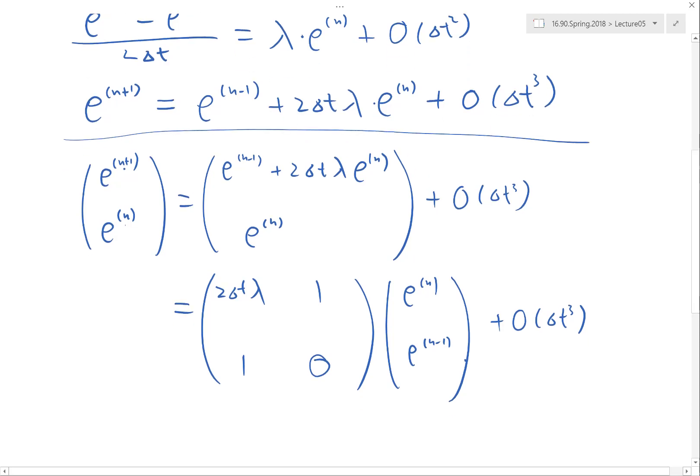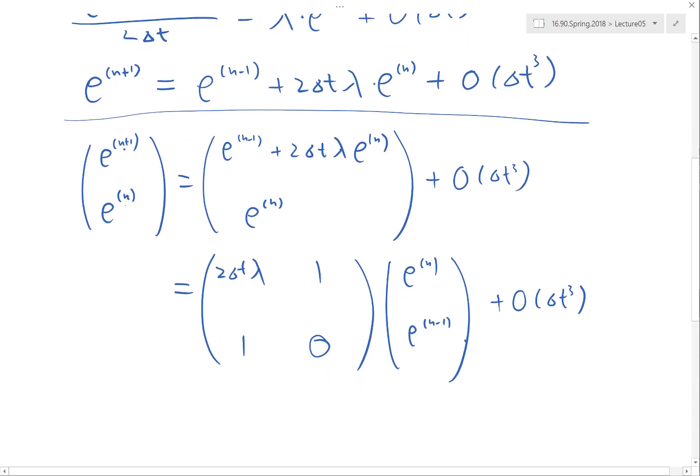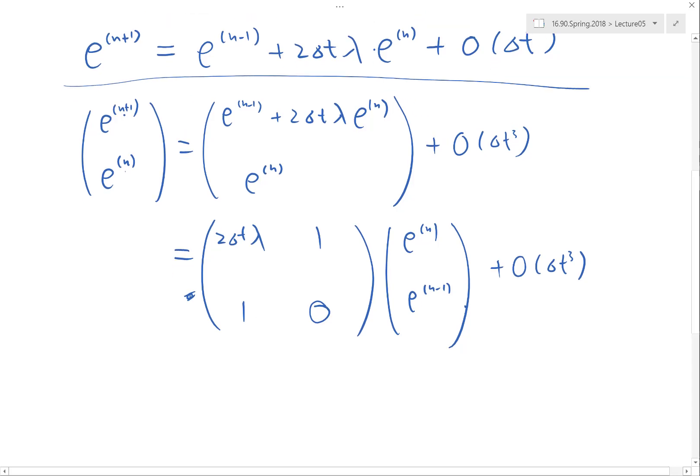Okay, so now I can do the same thing as in the forward order case. I can use this equation again and again, and if this matrix is called A, what I get is A to the n plus 1th power times the initial error, right, which we assume is 0.